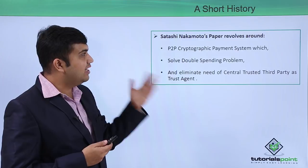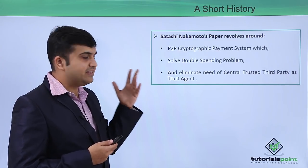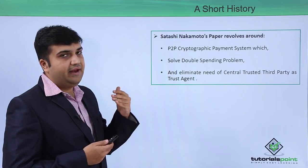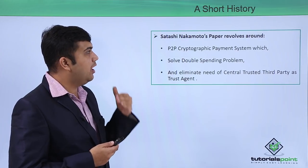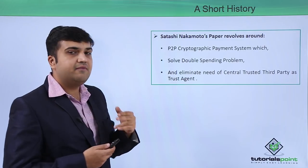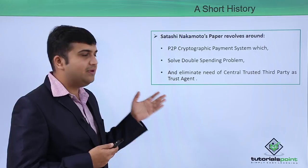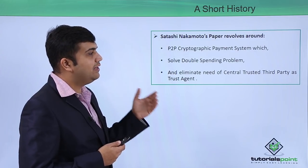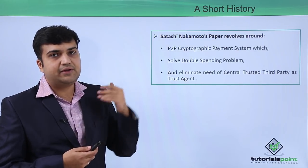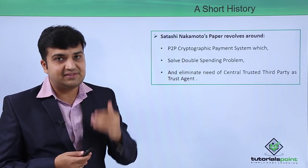Satoshi Nakamoto's paper revolves around these things. The purpose was to create a P2P cryptographic payment system which solves both problems: the double spending problem and the need to eliminate the central trusted third party as a trust agent which confirms the transactions.